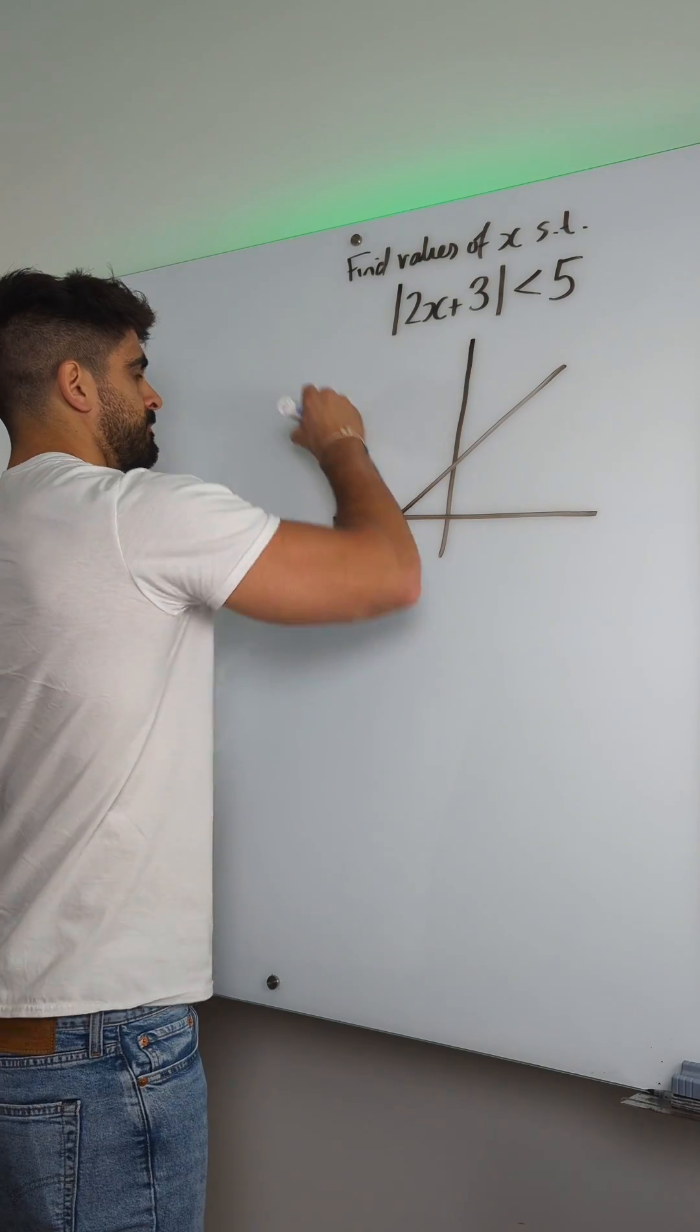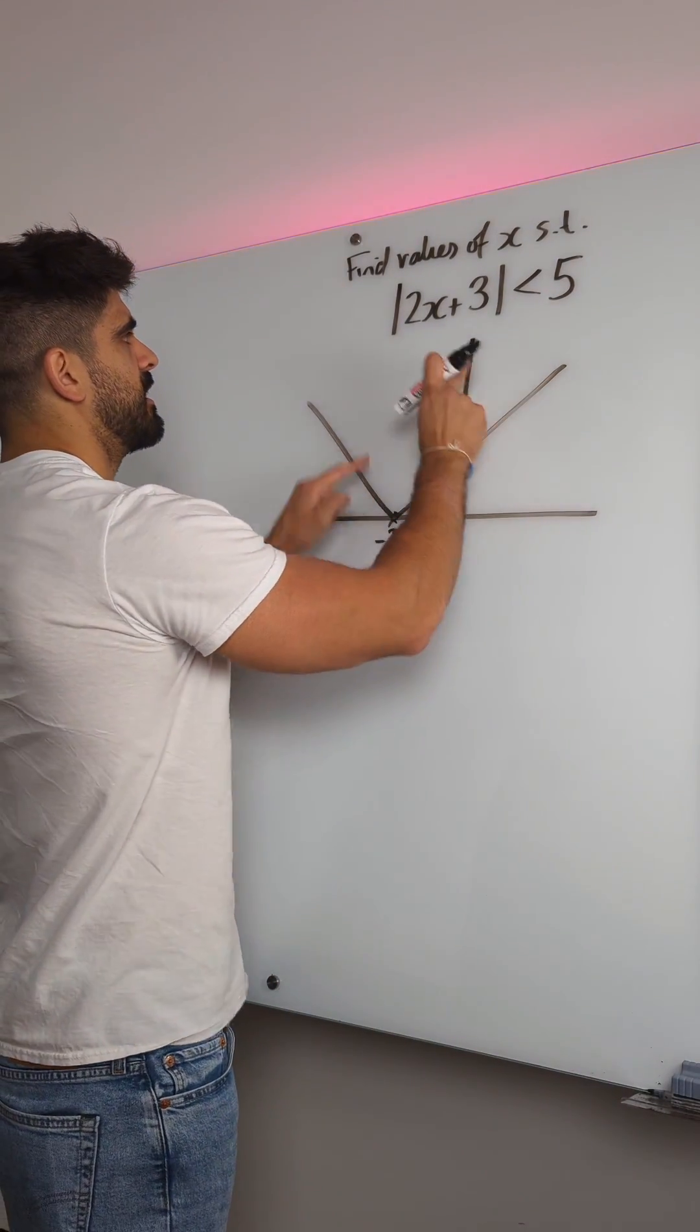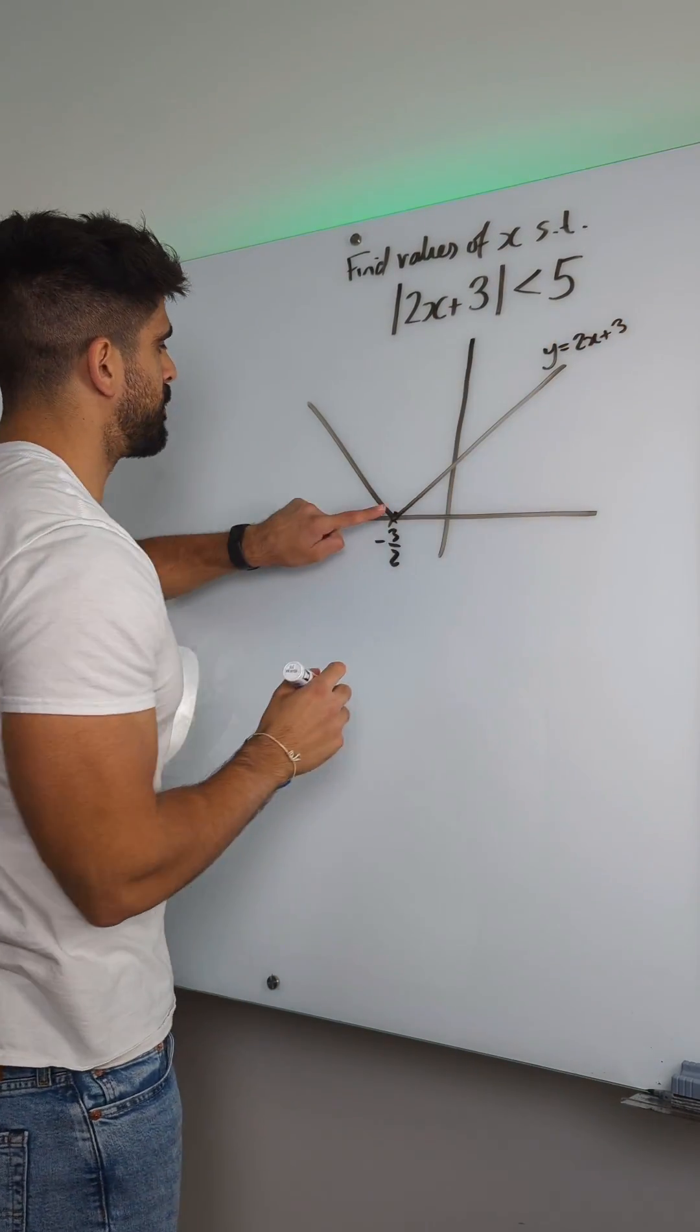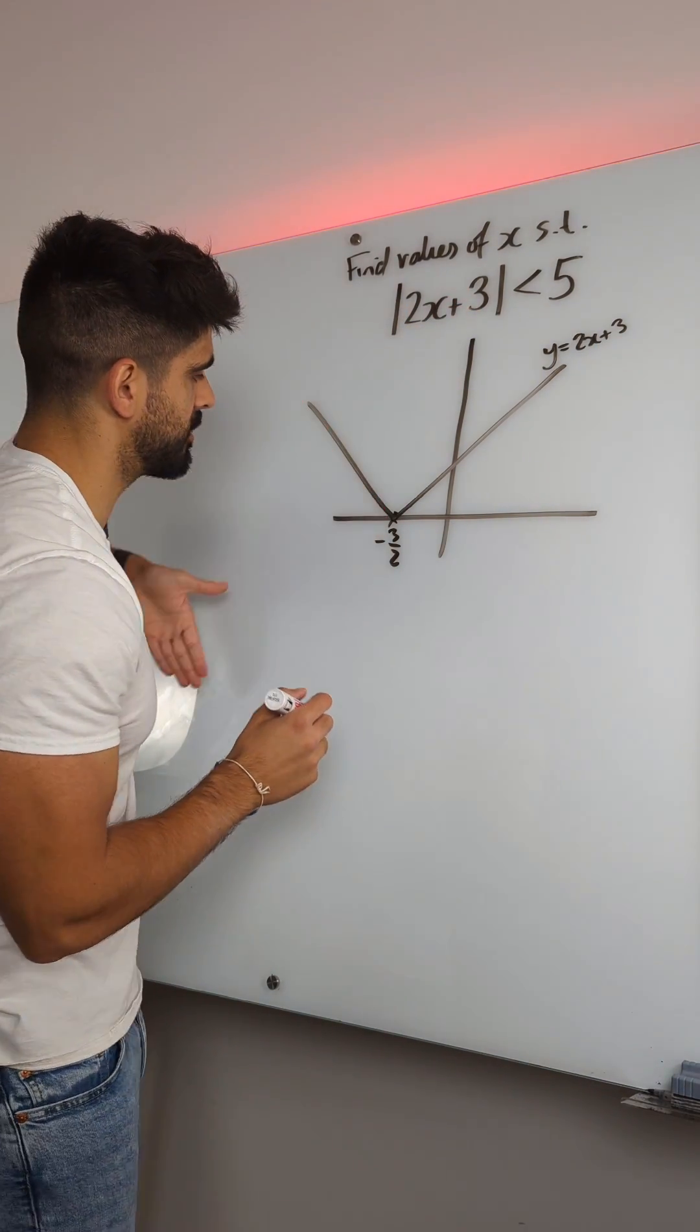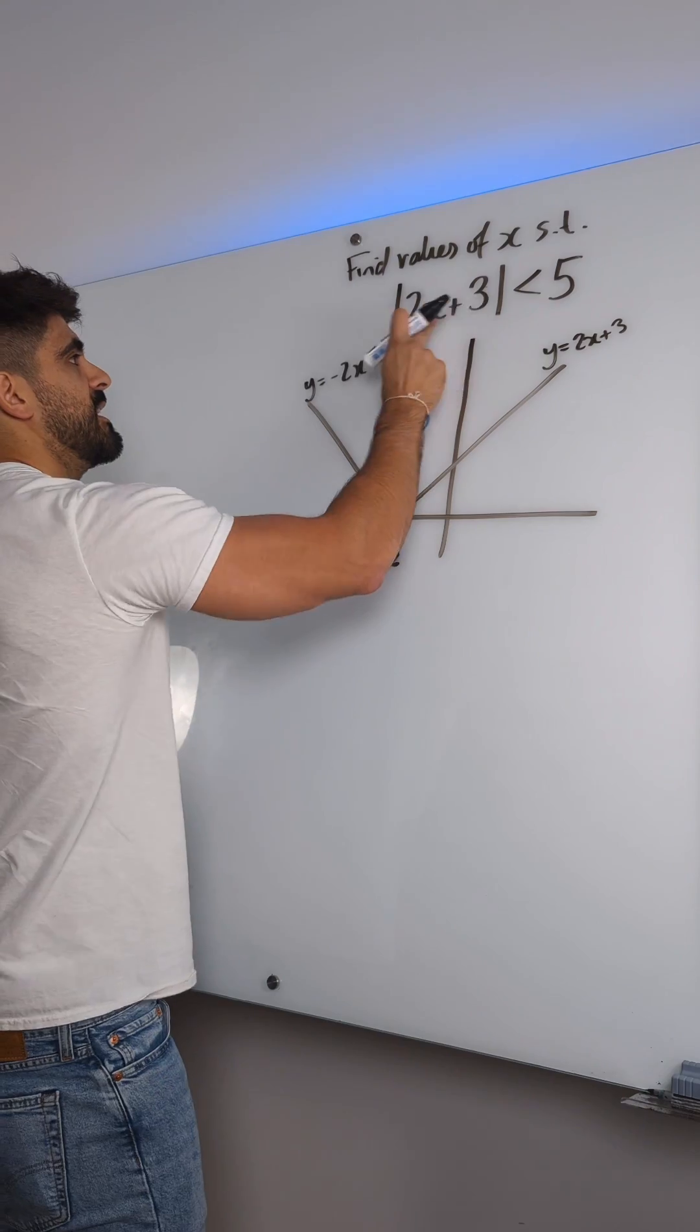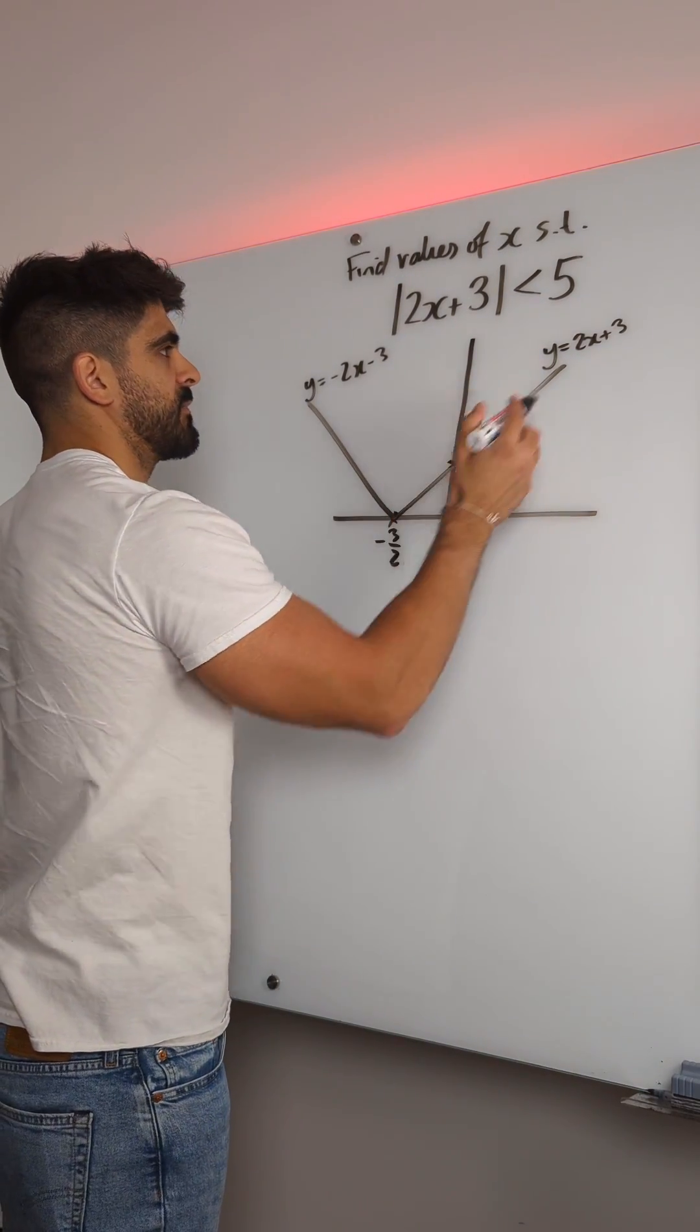Then you just draw a v-shape. This part of the line is 2x plus three because it's a positive gradient. This part has a negative gradient, so it's the negative of this. The modulus took all the negative parts of the line and reflected it up. So this would be y equals minus 2x minus three. This crosses the y-axis at three because of the plus three.